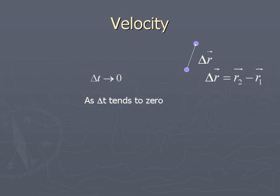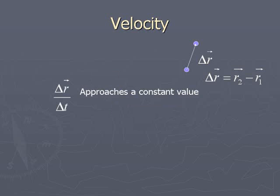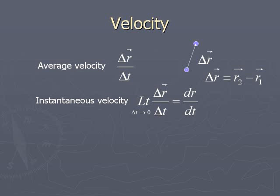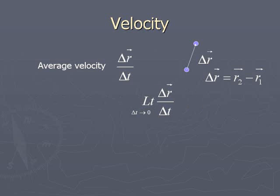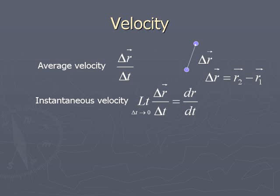If ΔT is made as small as possible, then ΔR will also become small. The ratio ΔR̄/ΔT reduces to a constant value represented by the limit of ΔR̄/ΔT as ΔT tends to 0. This limiting constant value is represented by dR/dt and is known as the instantaneous velocity.